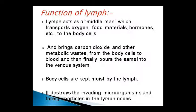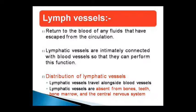This fluid carries waste material and CO2. Finally, it pours into the venous system. Body cells produce waste — as we mentioned, when microorganisms enter the body or a foreign particle arrives, it goes to the lymph nodes, which destroy it. This is the function of the lymph.